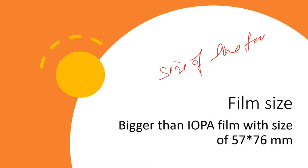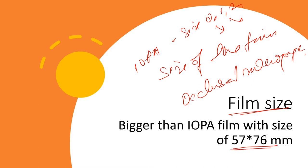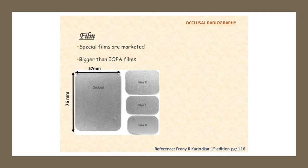Regarding film size: just as IOPA films have size 0, size 1, and size 2 with particular dimensions, occlusal radiographs also have a particular dimension. The occlusal film is bigger than IOPA film, with a size of 57 mm by 76 mm. This is an important MCQ point — 57 by 76 mm.